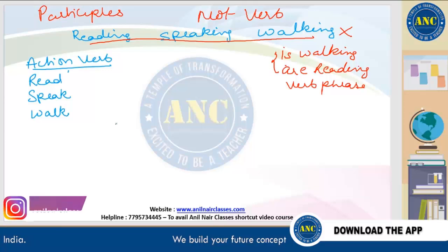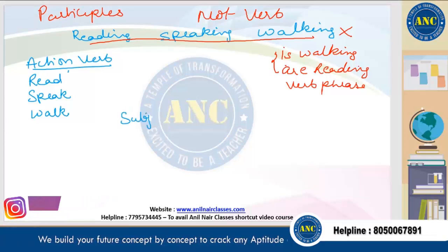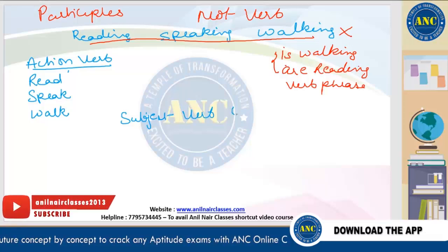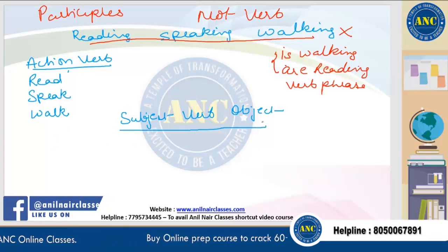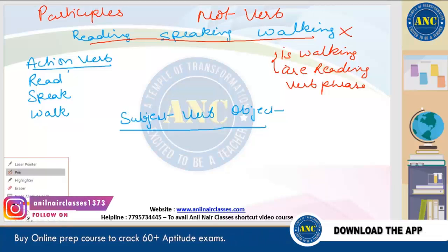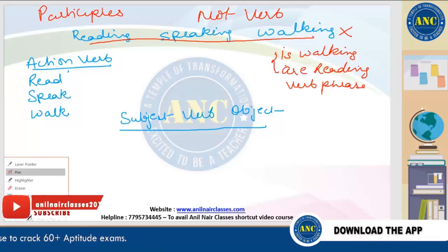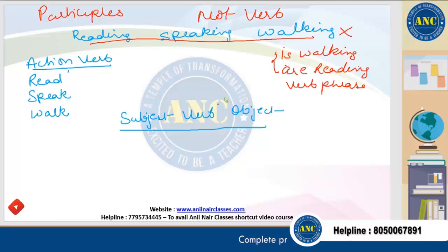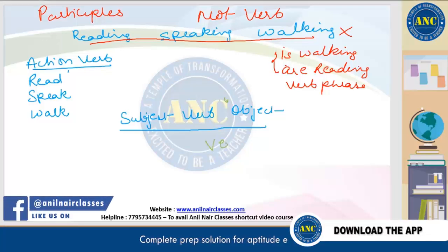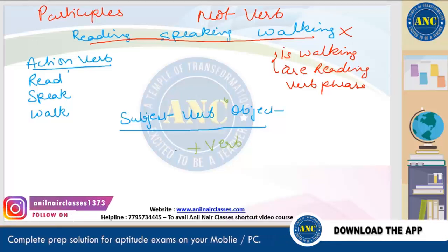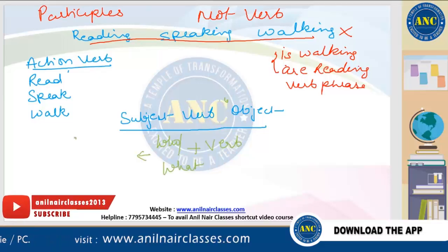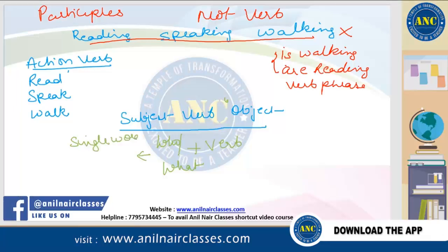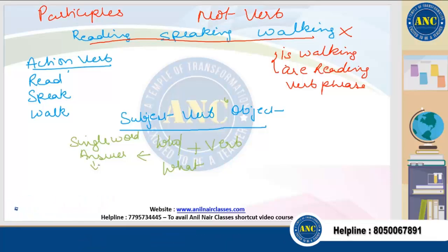Now the verb forms the basis of any sentence — it joins the subject and the object. You will have the subject first, then the verb, then the object. To find the subject, first find the verb, then ask the question 'who' or 'what' before the verb. You will get a single word answer, which is called the subject of the sentence.